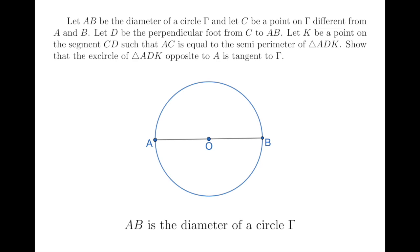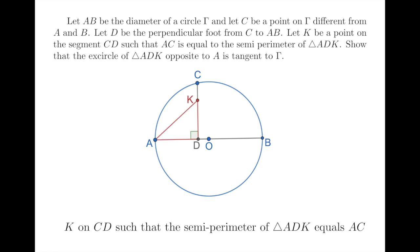We are given a circle gamma and AB is the diameter of the circle. Then we pick a random point C on the circle gamma and project it to the diameter AB. We denote D as the foot of C. Next, we construct a point K on the segment CD such that the semi-perimeter of the triangle ADK equals AC.